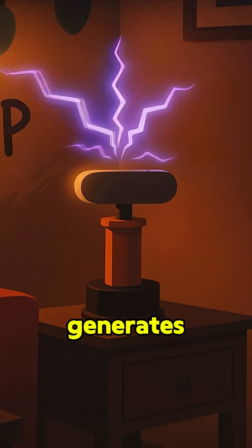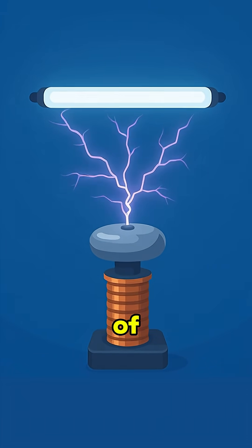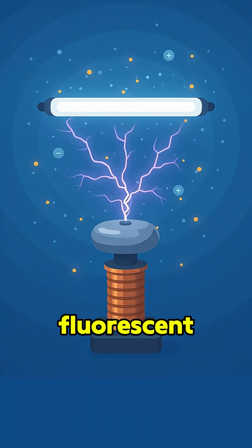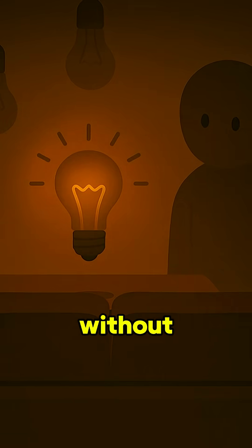A Tesla coil generates a strong electromagnetic field using hundreds of thousands of volts of high frequency electricity. That field ionizes the gas inside fluorescent or neon tubes, making them glow even without any wires attached.